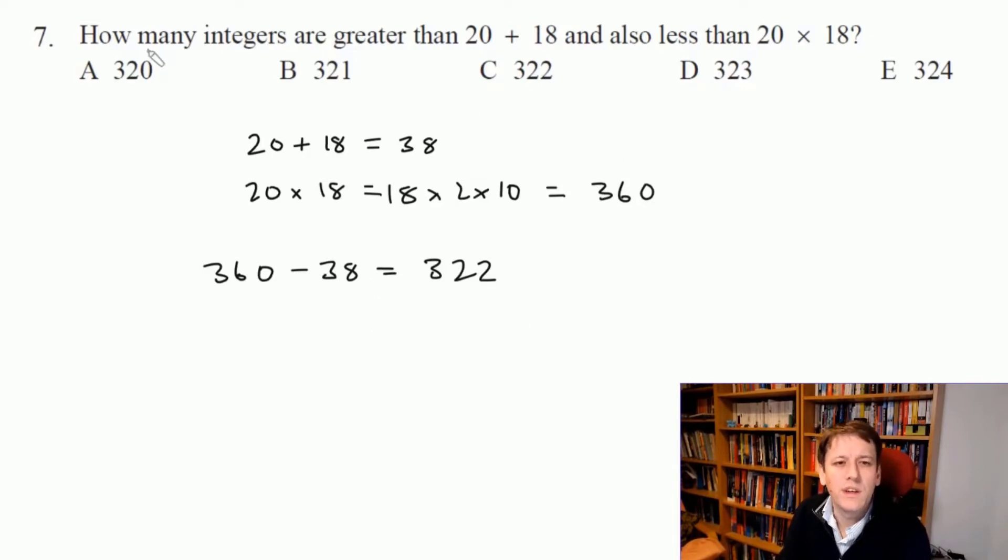Now 360 minus 38 is 330 minus 8 which is 322, but the answer is not 322 here. We want the integers that are greater than 38 and less than 360, so we don't want to include 38 or 360. You might just worry about whether we have to plus 1 or minus 1 or something from this answer.